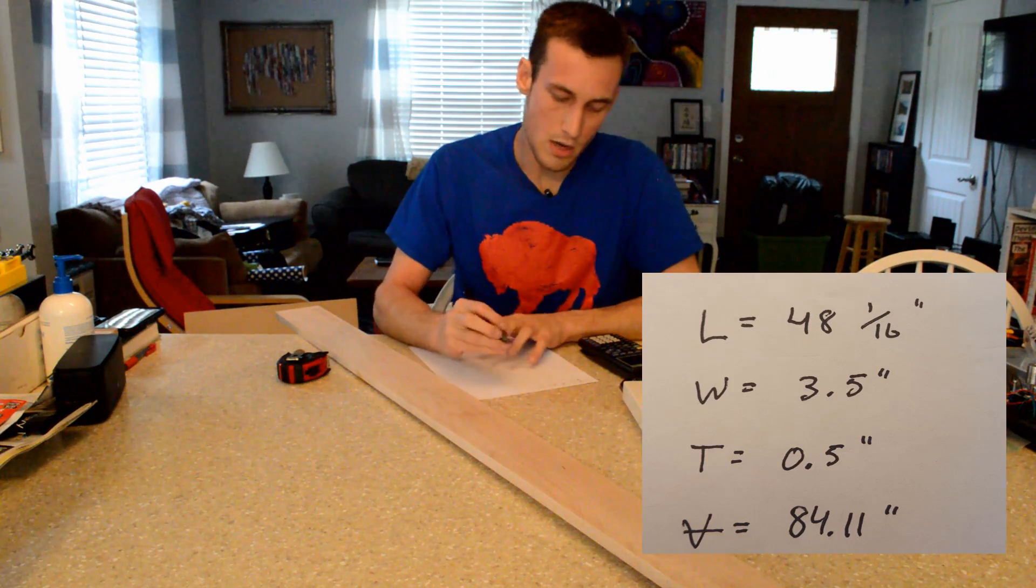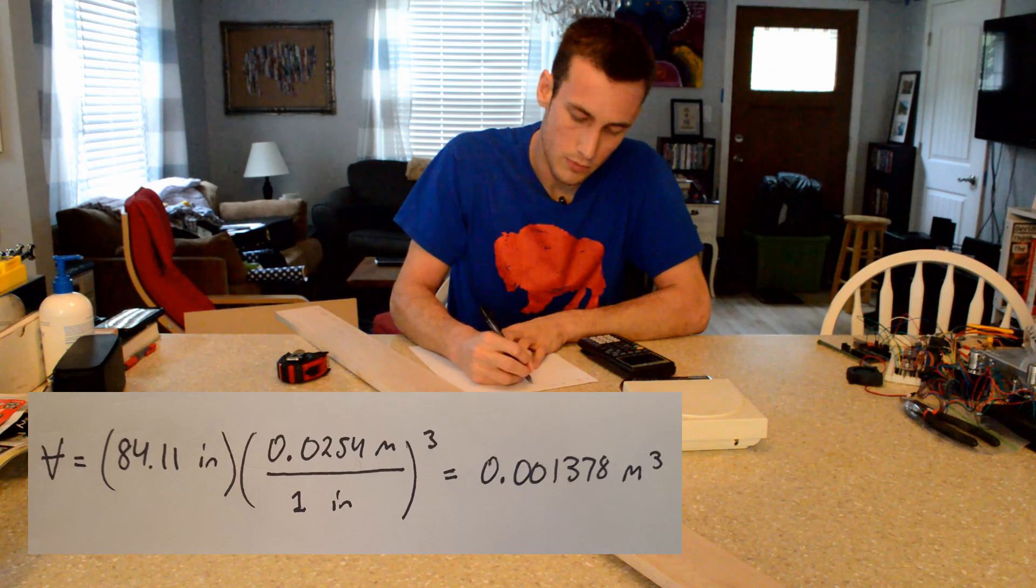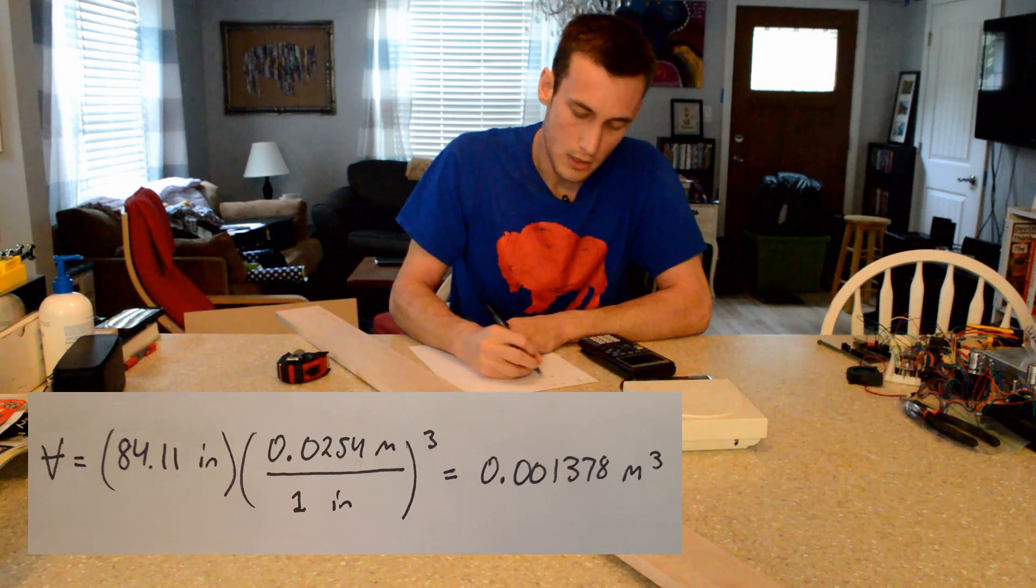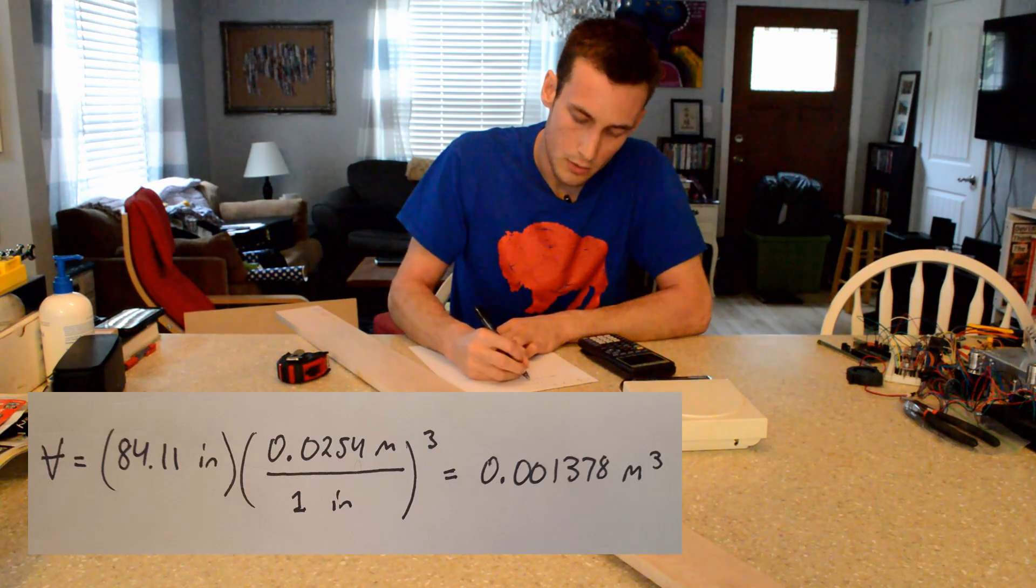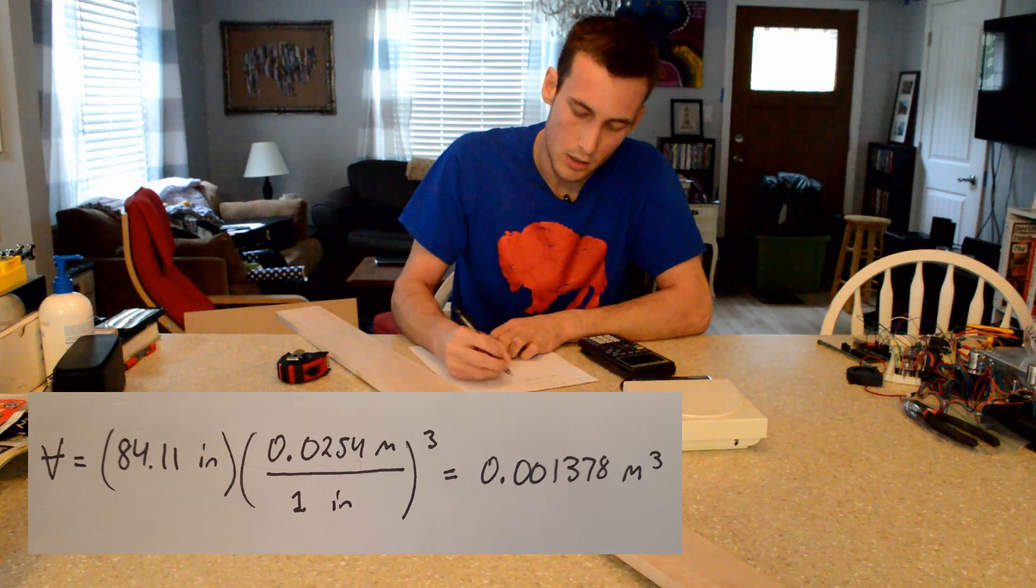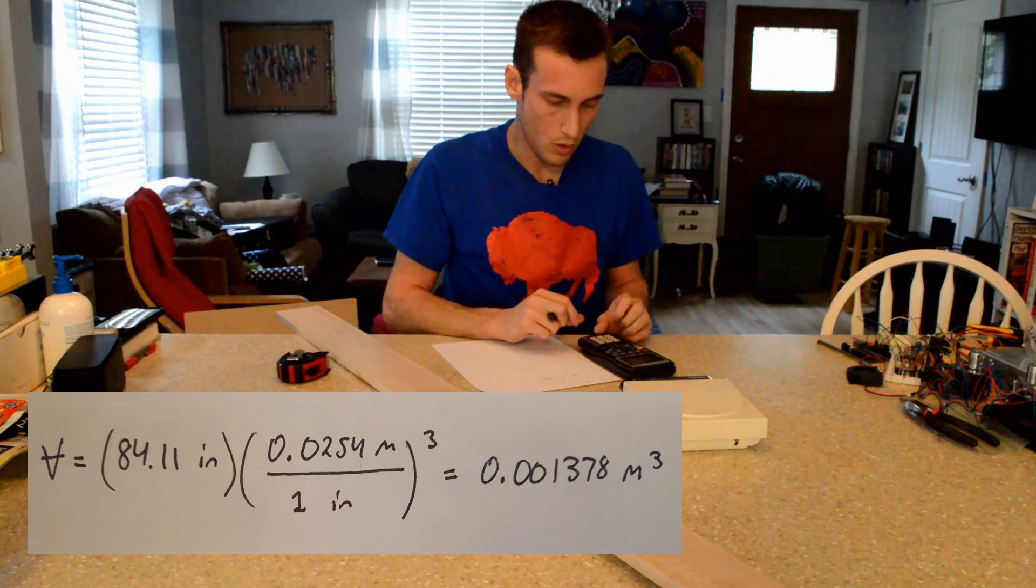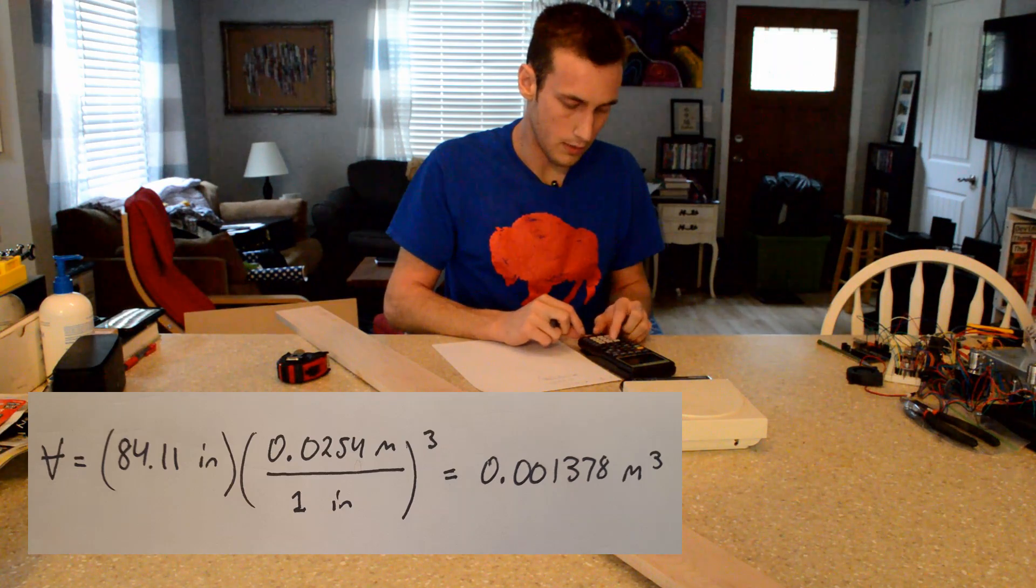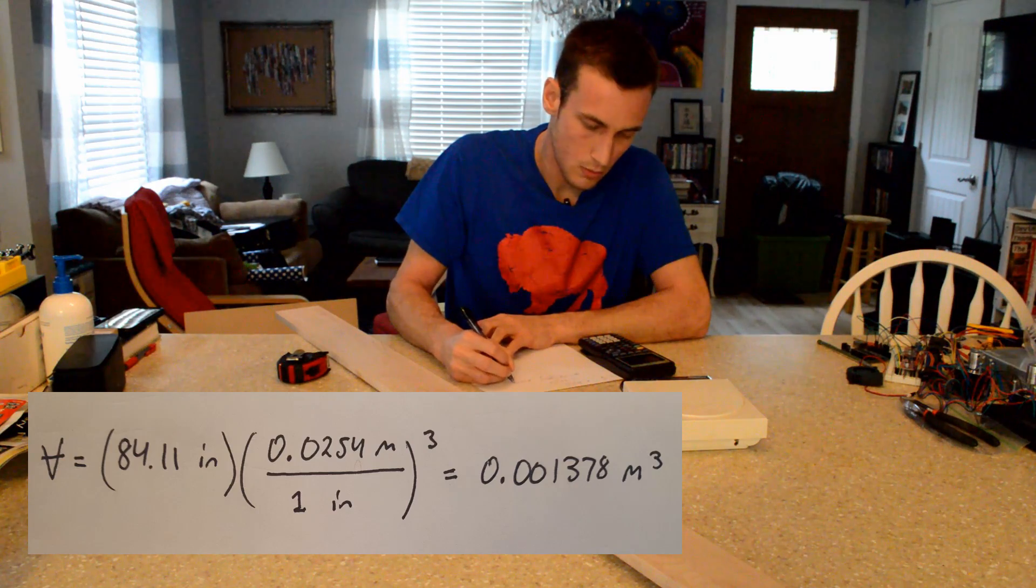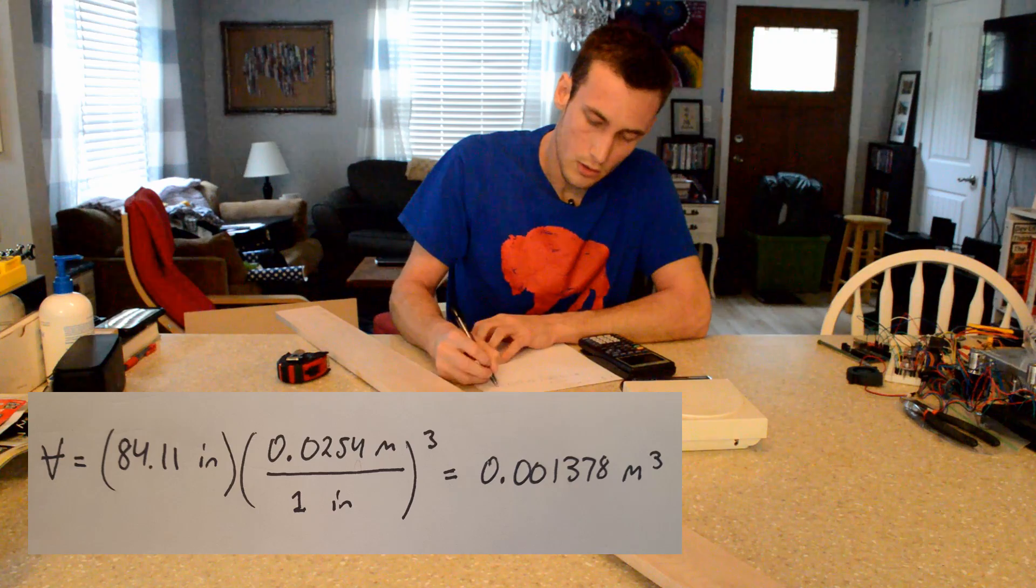We need to convert this to meters cubed, and we know that one inch is equal to 0.0254 meters. So to convert this, we need 84.11 inches cubed times (0.0254 meters per one inch) cubed to get it into the correct units. And so when we multiply 84.11 times 0.0254 cubed, we get the volume equal to 0.001378 meters cubed.